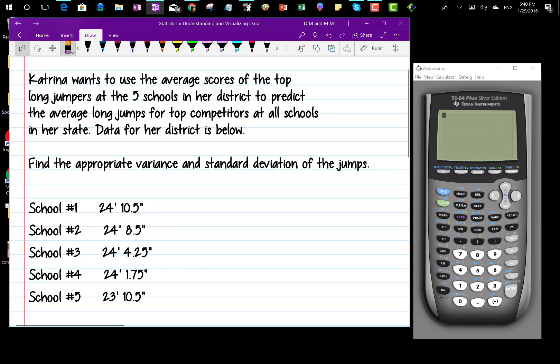Katrina wants to use the average scores of the top five long jumpers at the five schools in her district to predict the average long jumps for top competitors at all school districts in her state. When I see the words predict, and I'm using a small number to predict a large number of things, that tells me I have a sample.